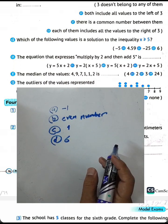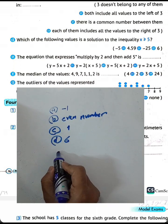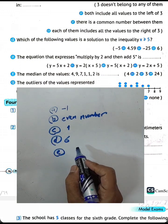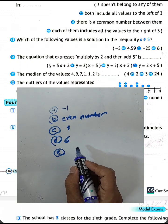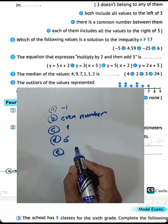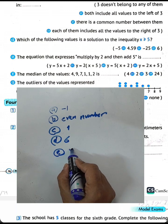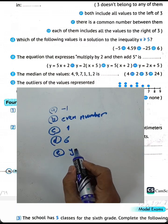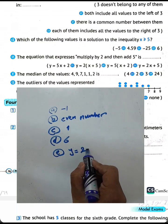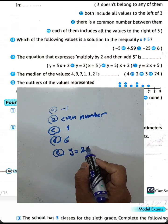Letter E: the equation where x is multiplied by 2. It will be y equals 2x. Values: 8, 5, 2.